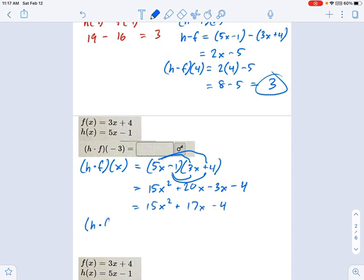And I'm going to do, at my last step, h of f of, h times f of negative 3. So that's going to be 15 times negative 3 squared plus 17 times negative 3 minus 4,